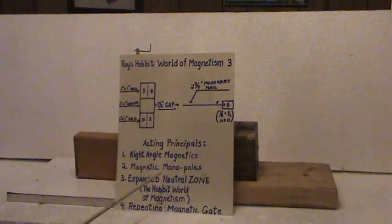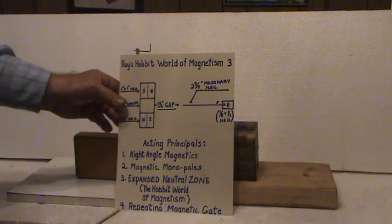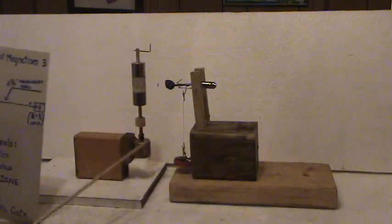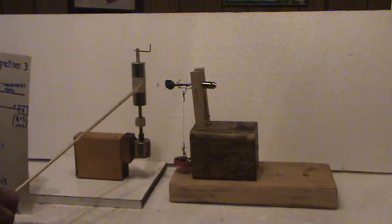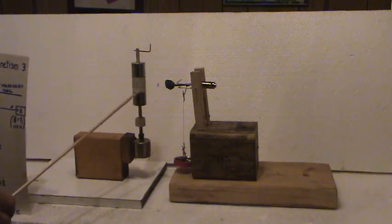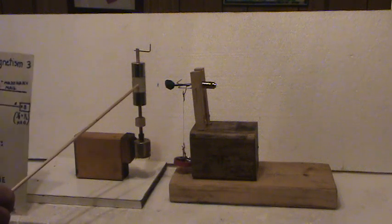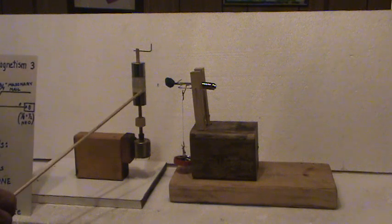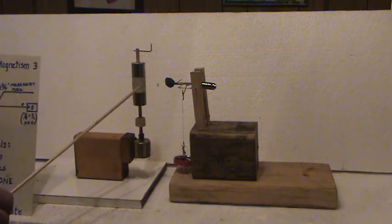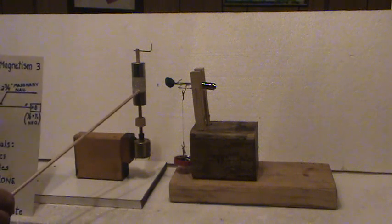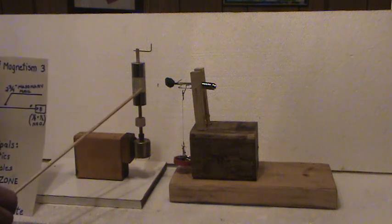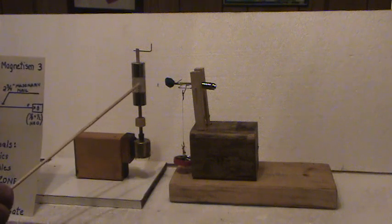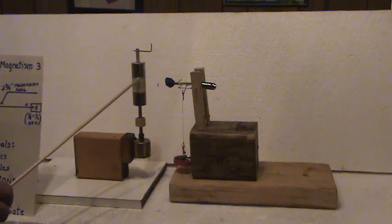The expanded neutral zone. It's also the Hobbit world of magnetism. This is this area here. You can go back and watch number one again. But in number one and two, I had this as an iron bar. And it wasn't as strong. I was surprised. So I want to put this air gap in here. It strengthened the effect of this neutral zone. This expanded neutral zone.